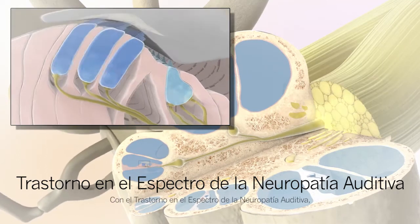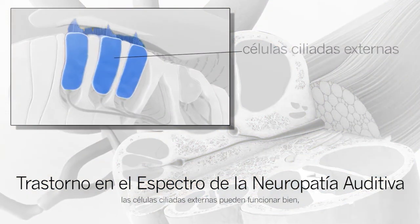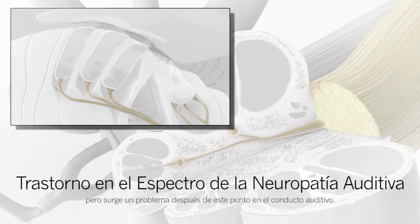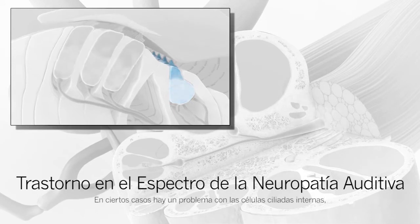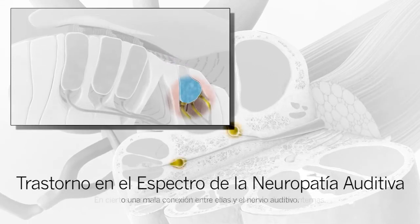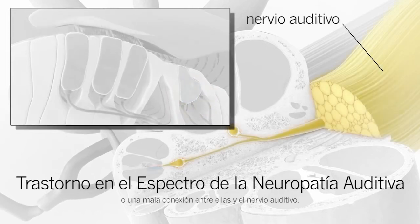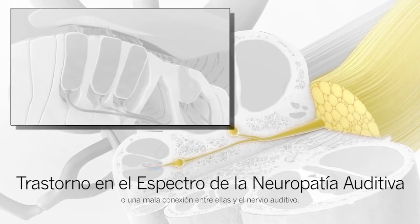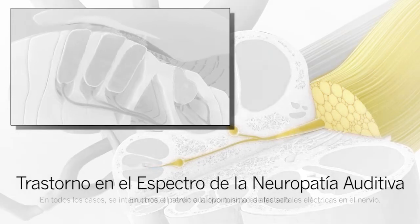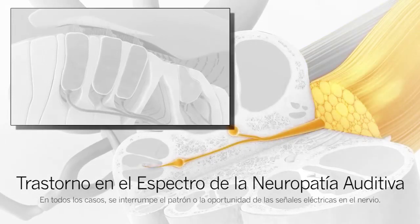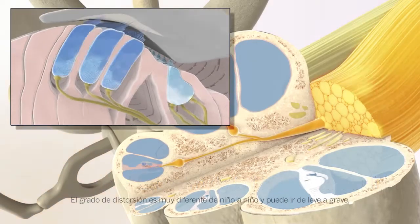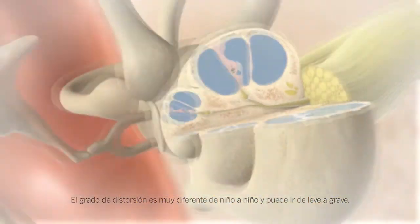With Auditory Neuropathy Spectrum Disorder, the outer hair cells in the cochlea may work well, but a problem occurs after this point in the hearing pathway. In some cases, there is a problem with the inner hair cells or a poor connection between them and the auditory nerve. In other cases, the auditory nerve itself is affected. In all cases, the pattern or timing of the electrical signals in the nerve is disrupted. The degree of this distortion is very different from child to child and can range from mild to severe.